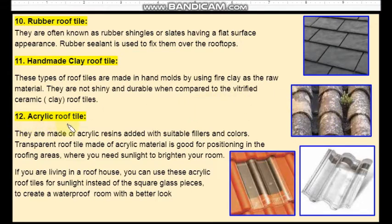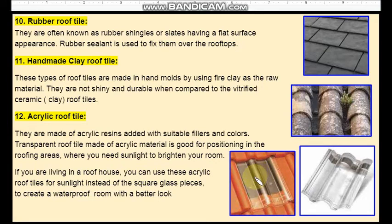Twelfth one is acrylic roof tiles. They are made of acrylic resins with suitable fillers and colours. The transparent roof tiles made of acrylic material are good for ventilating your room with needed sunlight. If you are living in a roof house, you can use these acrylic roof tiles for sunlight instead of square glass pieces, to create a waterproof room with a better look.